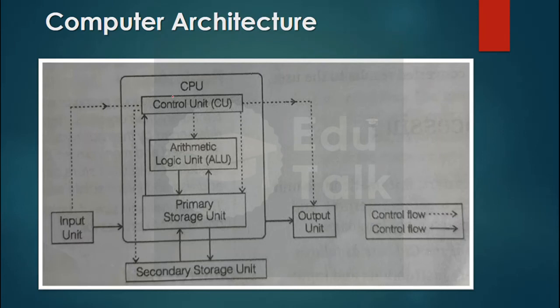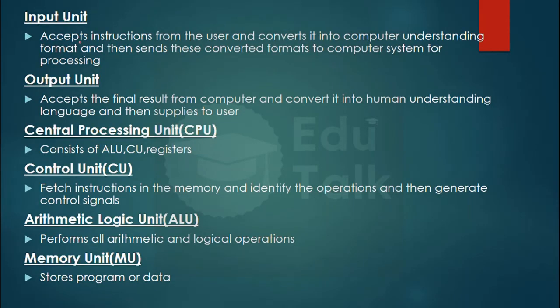Let's discuss computer architecture. Input unit accepts user instructions, converts them to computer understandable format, and sends to processor. Output unit accepts final results and converts to human understandable language. CPU consists of ALU, CU, and registers. Control unit controls instructions and memory. Arithmetic Logic Unit, ALU, performs all arithmetic and logical operations like addition and subtraction. Memory unit stores data permanently or temporarily. The answer is option A, ALU.